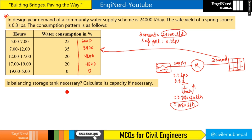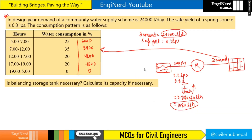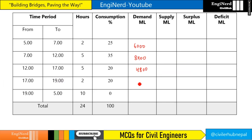Now let's build the table according to this consumption pattern. The time periods are: 5 to 7 (2 hours), 7 to 12 (5 hours), 12 to 17 (5 hours), 17 to 19 (2 hours), and 19 to 5 (10 hours). The corresponding demand values are: 6,000 liters, 8,400 liters, 4,800 liters, 4,800 liters, and 0 liters respectively.